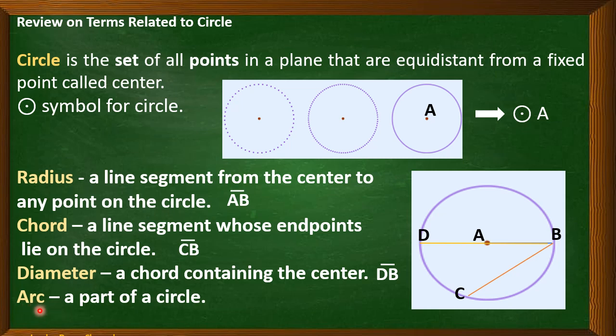Next, arc. Arc is a part of a circle. We have arc DC as our example. The symbol for arc is this one. So we have arc DC. We can also have arc CB or arc DBC.